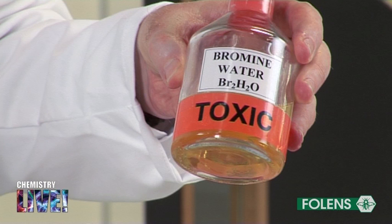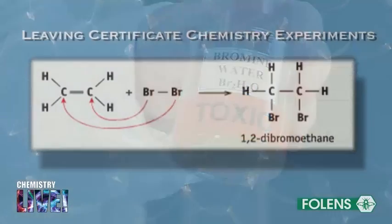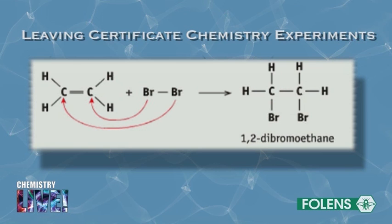Addition of bromine. Alkenes are more reactive than alkanes because of the presence of the carbon-carbon double bond in alkenes. For example, bromine adds across the carbon-carbon double bond to form a colorless oily compound called 1,2-dibromoethane.